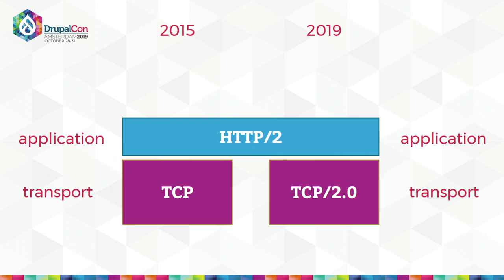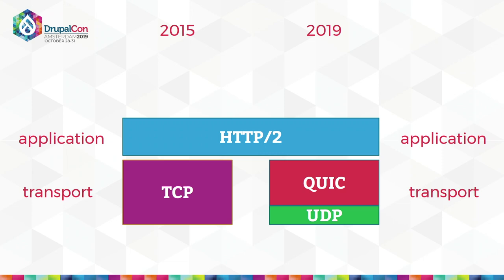Why do we need QUIC in the first place? What we really wanted was TCP 2.0, because TCP is getting old and has a lot of inefficiencies on modern networks. The problem is TCP is also very popular — there are billions of devices implementing it. If you want to change anything, you have to wait until all those devices are updated. We tried that for decades and it simply does not work. So QUIC is built on top of the only other well-supported transport layer protocol called UDP. This has led some people to say QUIC has the features of UDP like unreliability — that is completely false. QUIC is very much an improvement on TCP with much of the same features, only much better.